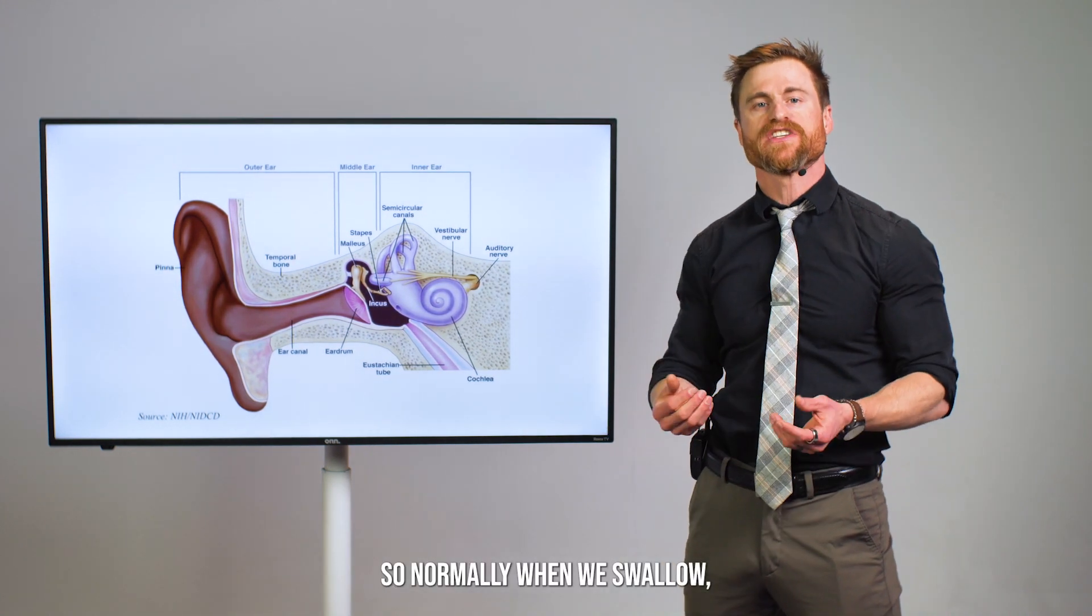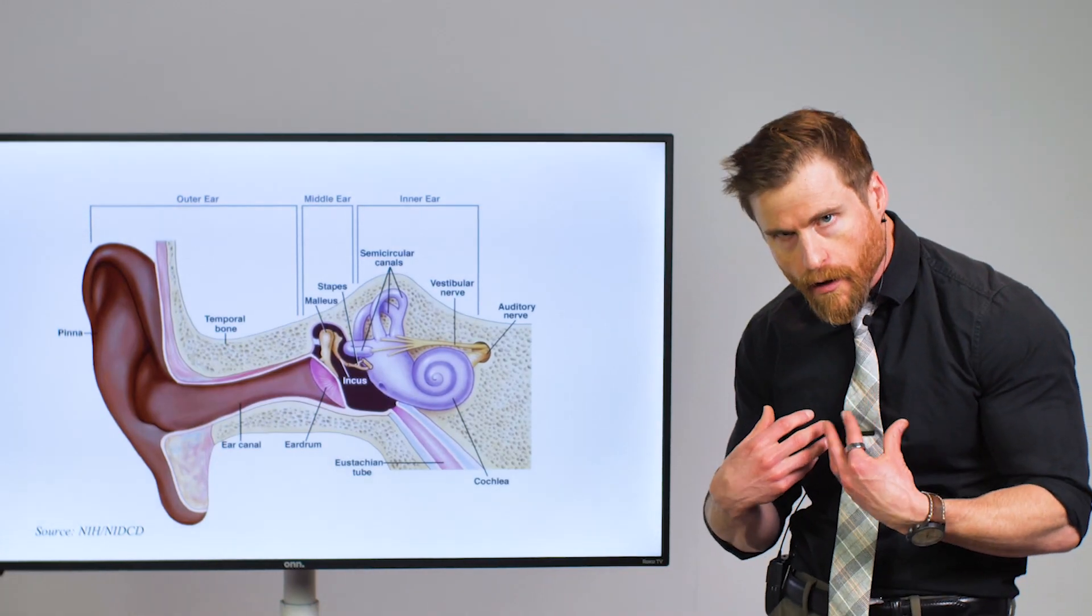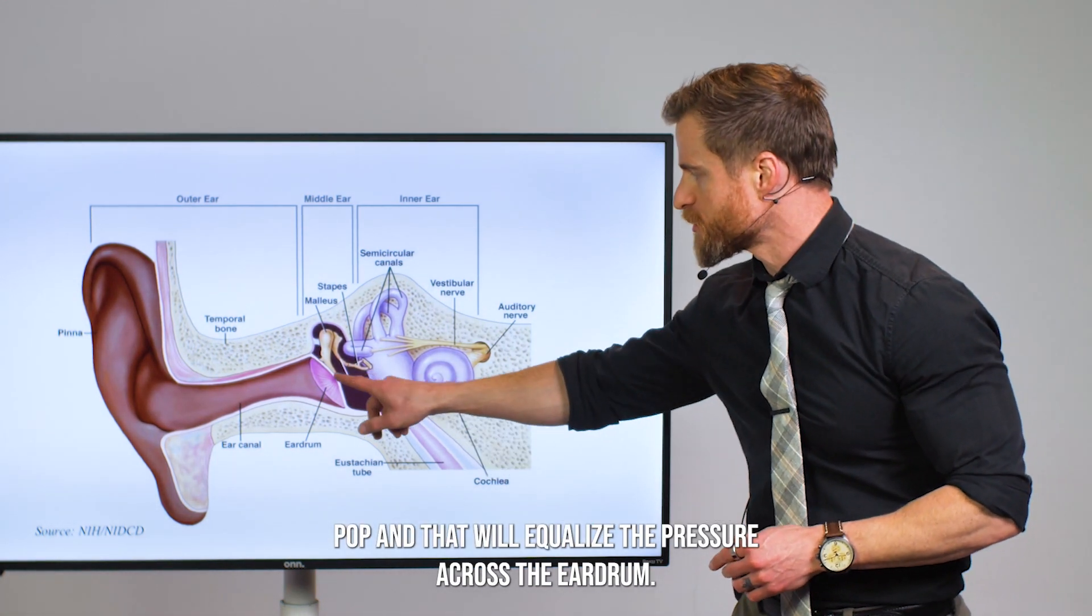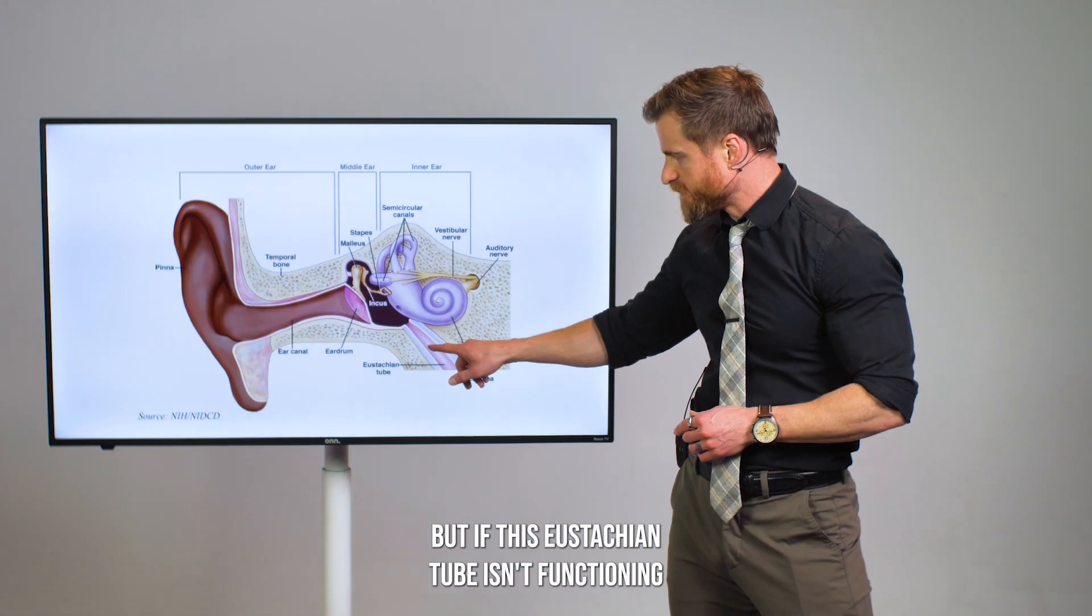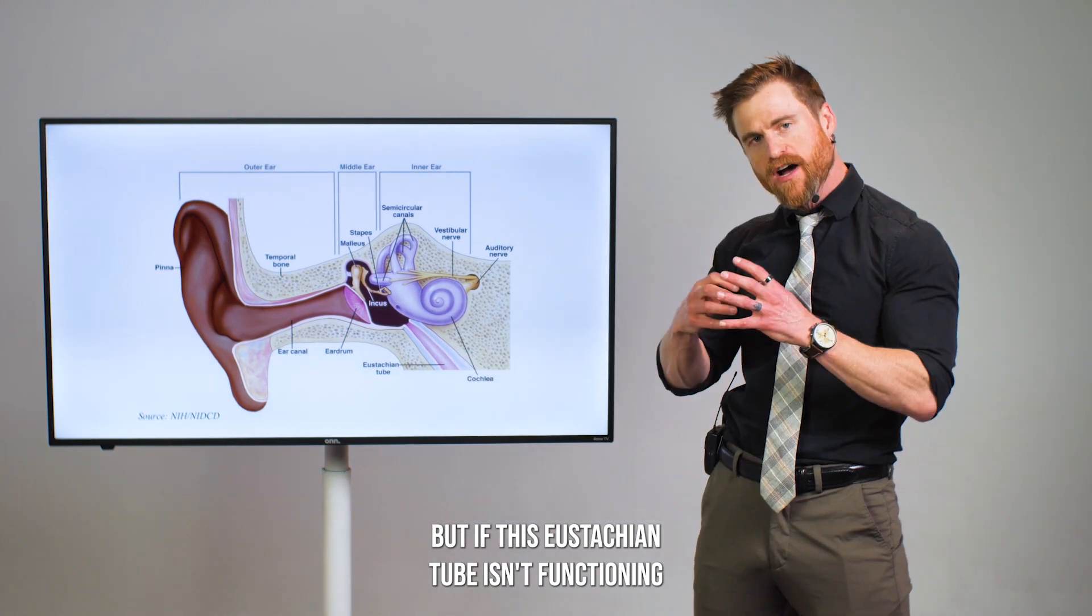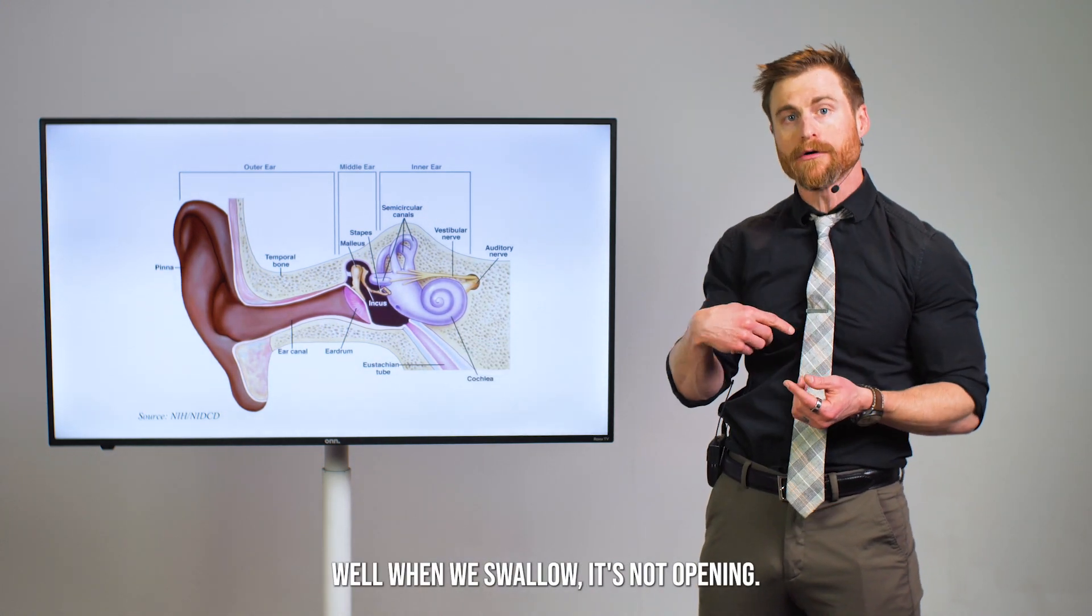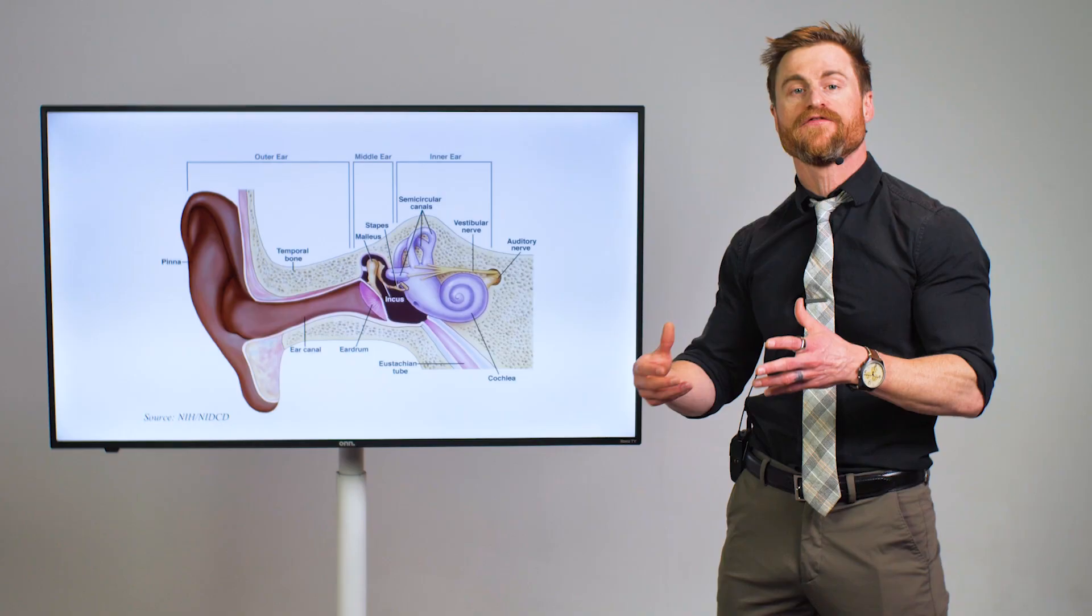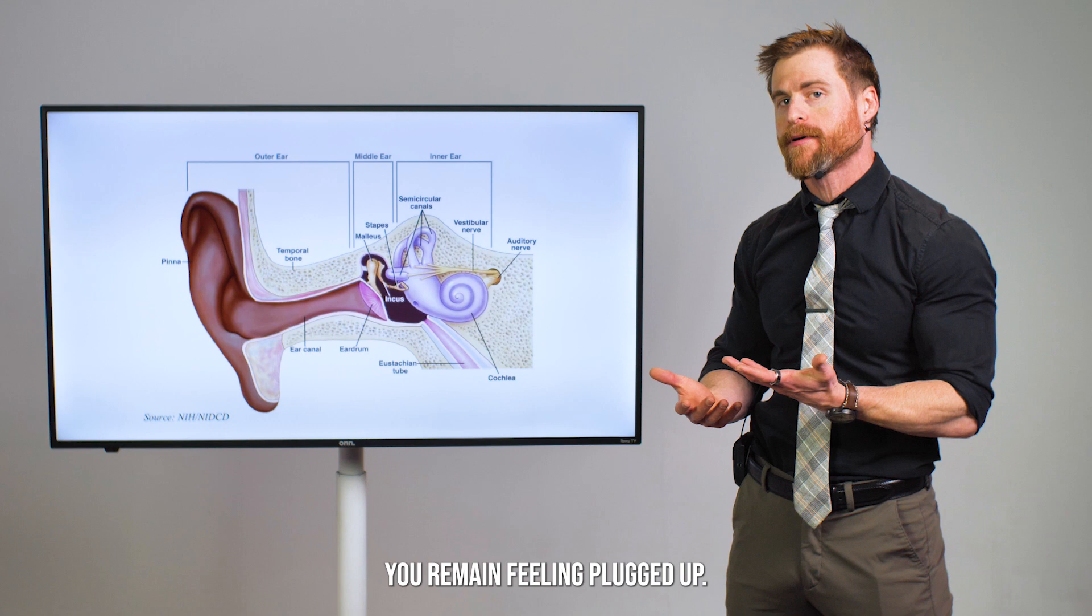Normally when we swallow, we can feel our ears pop and that will equalize the pressure across the eardrum. But if this eustachian tube isn't functioning well, when we swallow it's not opening. So the pressure remains the same. You remain feeling plugged up.